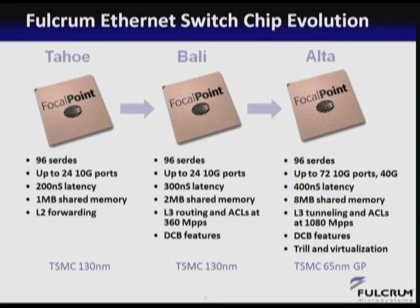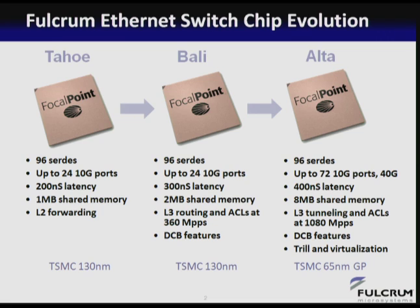We followed that up with our Bali chip, which expanded specifically in the frame processing pipeline, adding routing, some data center bridging features, really focused on the complexity of protocols that could be processed by the switch. That was still in TSMC 0.13. It was effectively a derivative chip where we reused much of the layout from Tahoe and just focused on the frame processing pipeline block. Meanwhile, the industry has been moving along, and many new protocols have come around — ongoing trends of convergence on Ethernet, virtualization, and scaling of the data center have created a big need for new protocols in switch silicon.